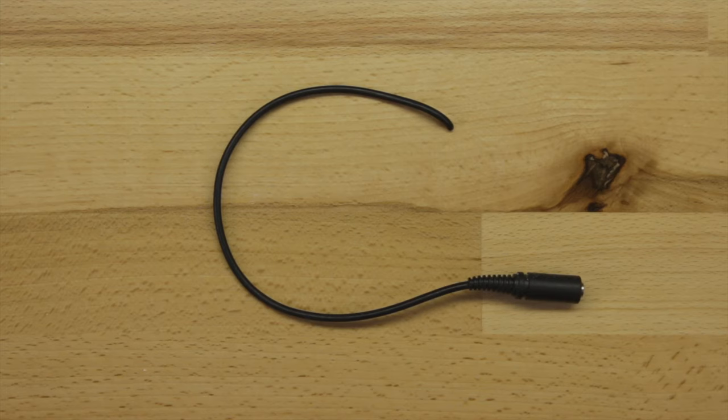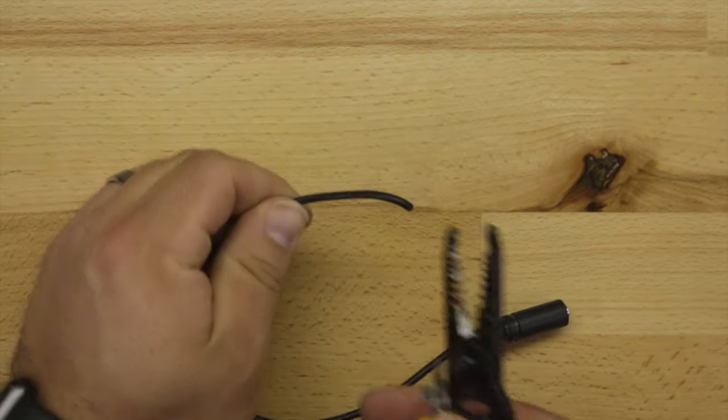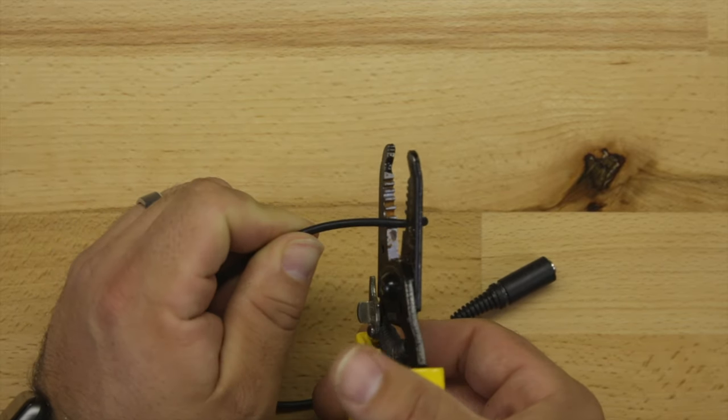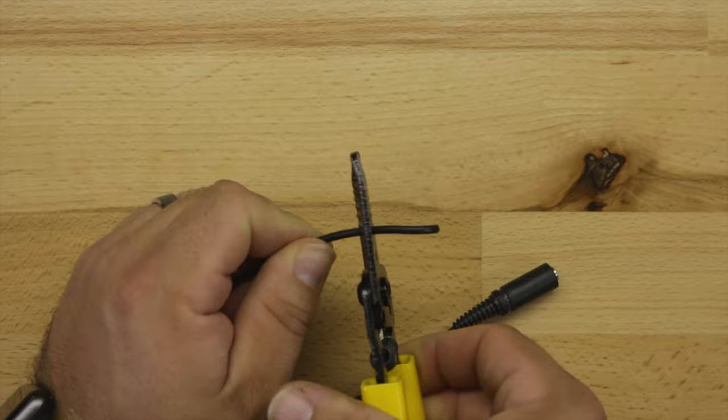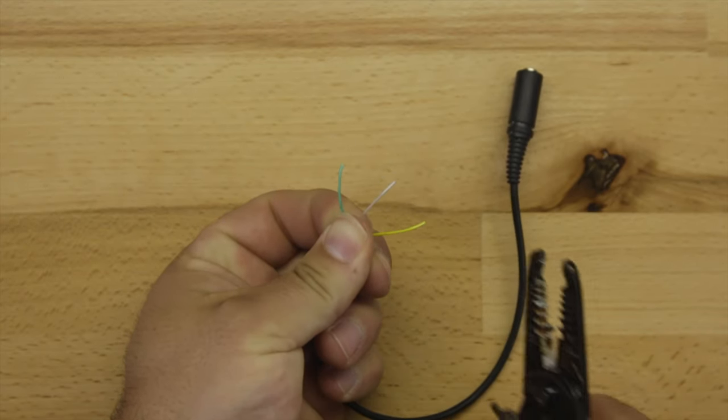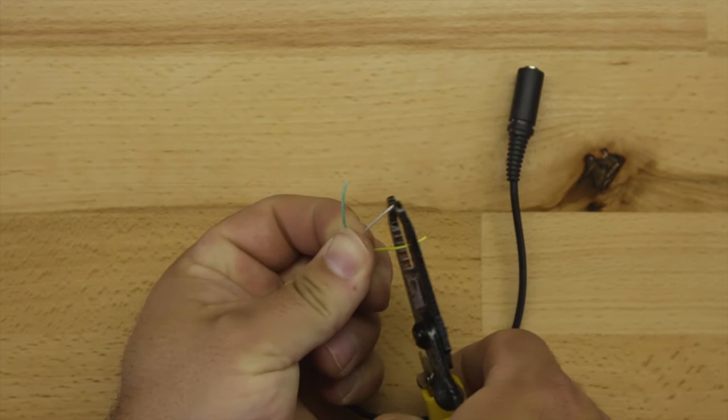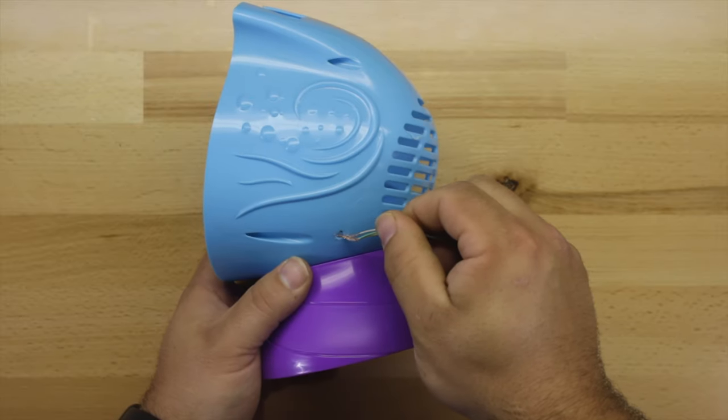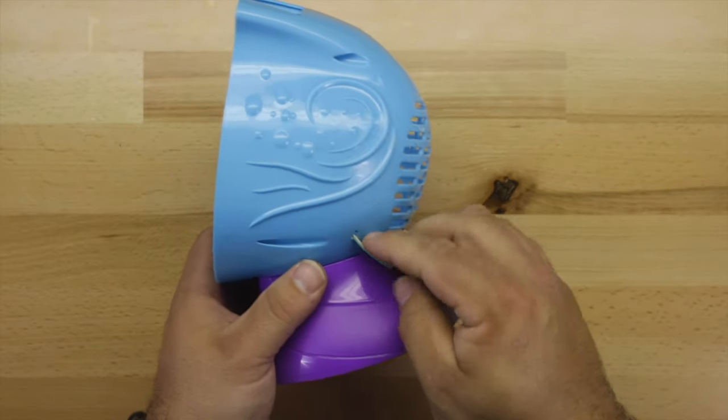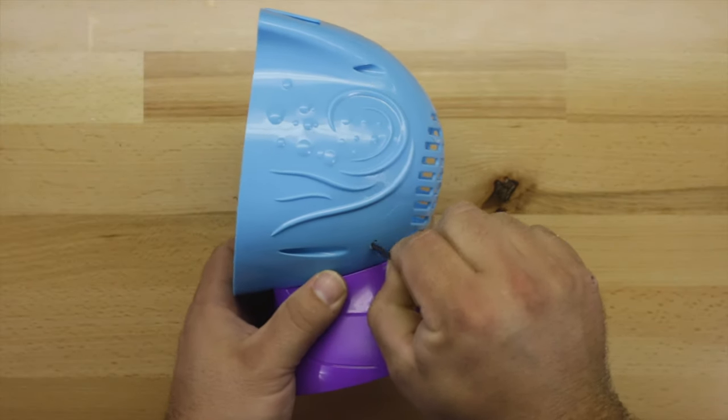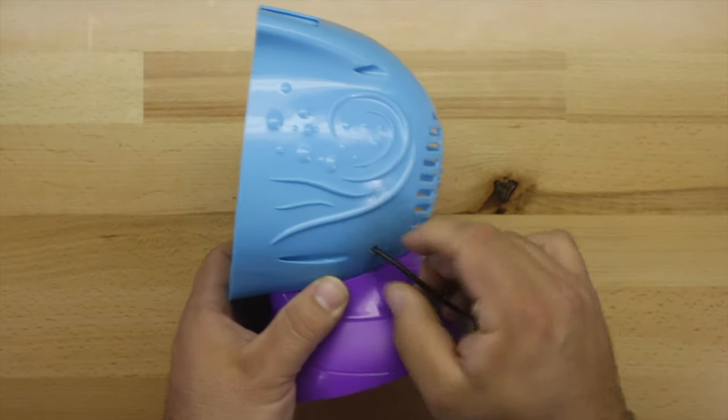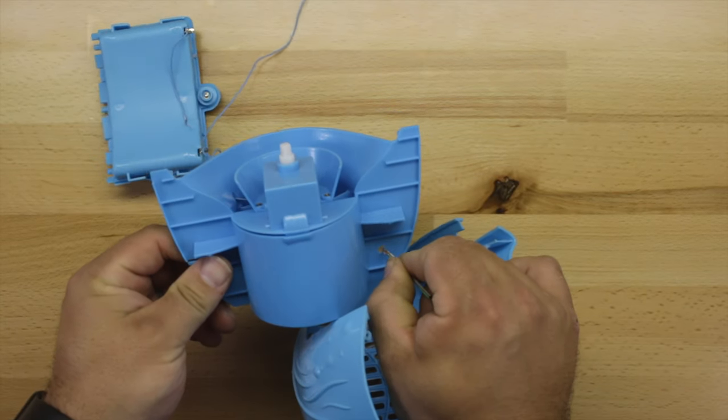Now we're going to prep our 3.5mm headphone jack. Go ahead and strip the black casing as well as the three wires inside. Your wire colors may vary. Fish the wire through the housing and through the fan assembly.